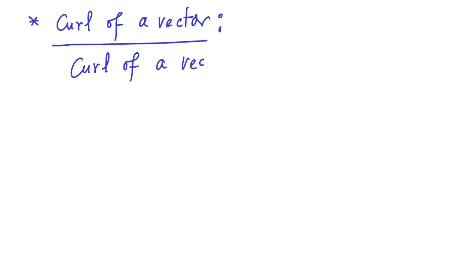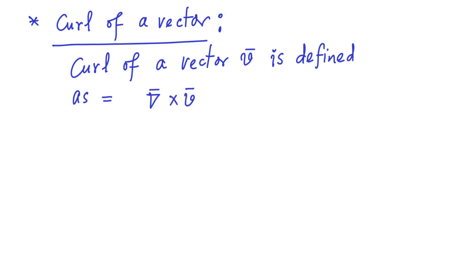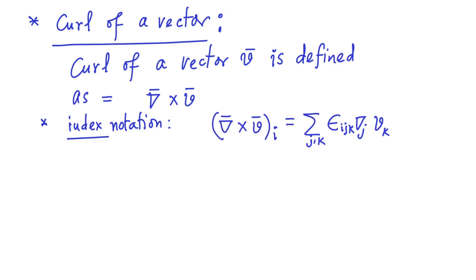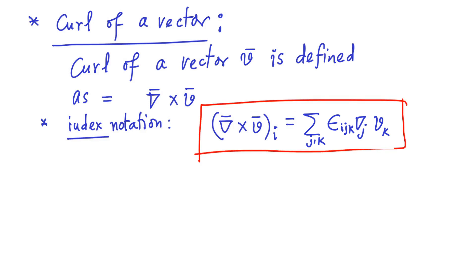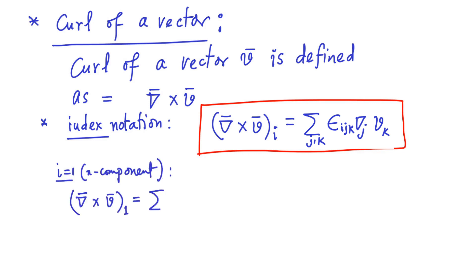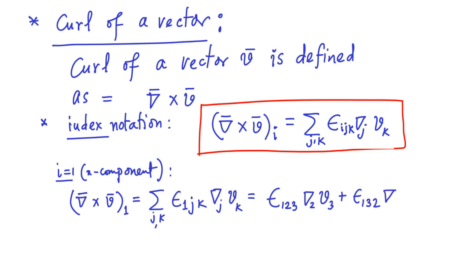Let us now introduce the so-called curl of a vector. The curl of a vector v is defined as the cross product between the gradient operator and the vector v. In index notation, we can express the i-th component of curl of v as the summation over j and k of the Levi-Civita symbol epsilon_ijk times del_j v_k. In particular, we can check the x-component, that is i equal to 1. When we substitute the value of epsilon_ijk, it reduces to the standard form. In other words, the x-component of curl of v becomes del/del y of vz minus del/del z of vy.